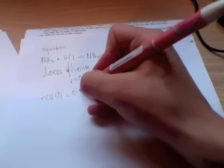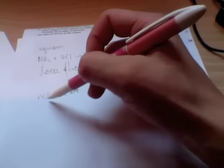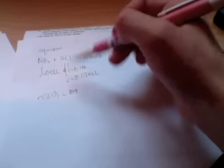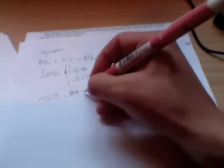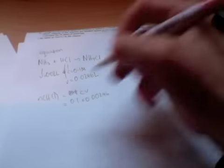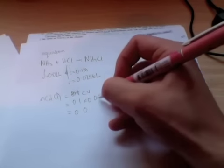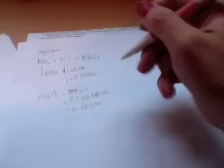Okay, so for the first step, we can always work out the moles of the known. That is, the known is the solution that we have, our primary standard or in this case HCl, so secondary standard with our known concentration. Moles equals CV equals 0.1 times 0.0246 equals 0.00246. Jumped the gun.